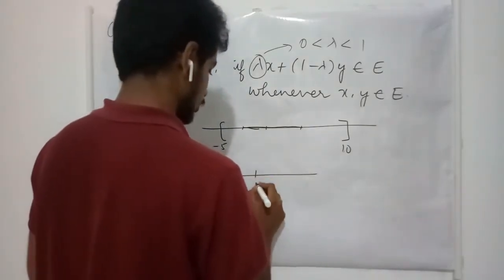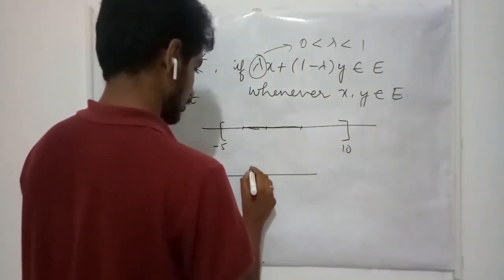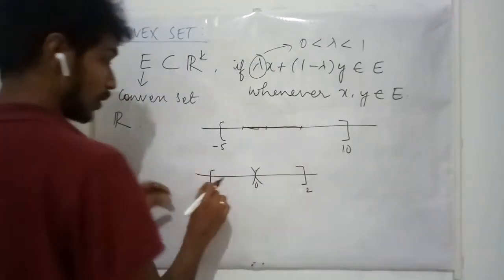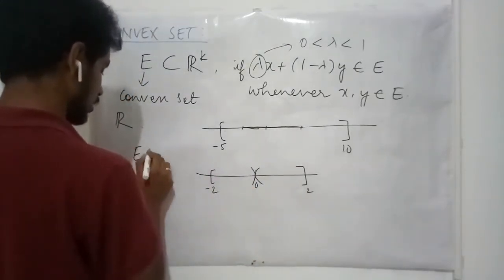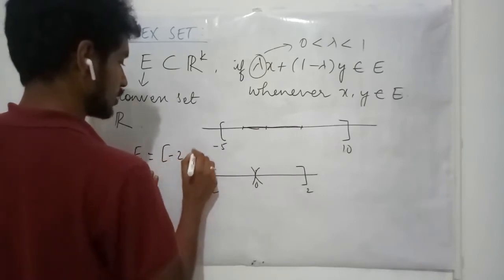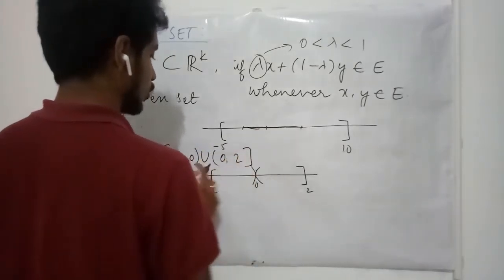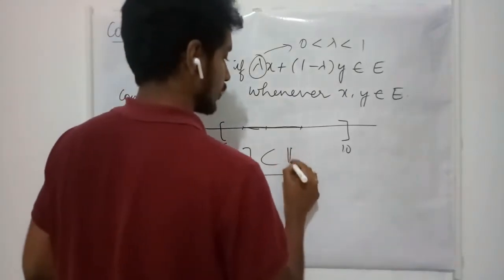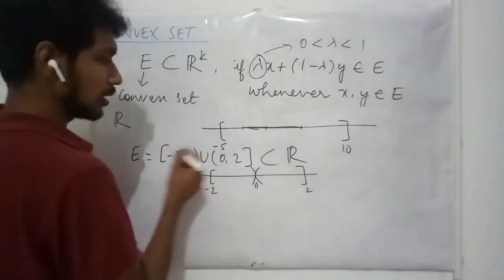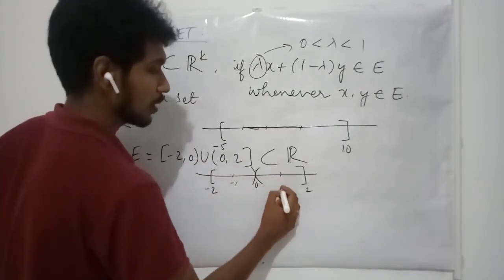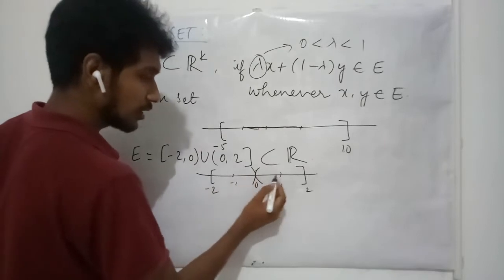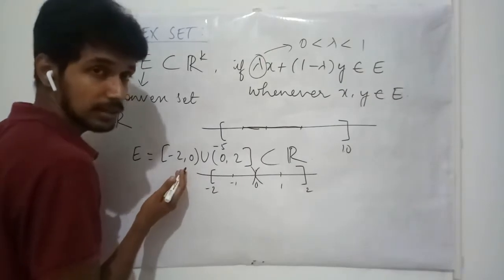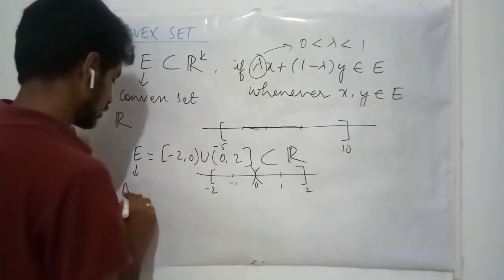Now let me choose E as the union of the interval (minus 2, 0) and (0, 2) — that is, omitting the point 0. Now if I take any two points from this, say minus 1 and 1, and draw a line joining these two points, I have 0 inside it. But 0 is not a member of E. Therefore, this E is not a convex set.